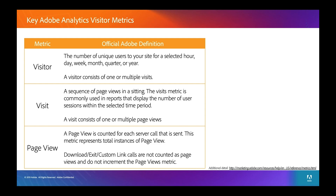The top metric is the number of visitors, or the number of unique users that come to your site for a certain time period. A visitor might have one or more sessions or visits during a given time period, and on a visit they might go to a certain number of pages.